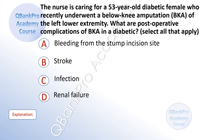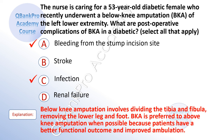The nurse is caring for a 53-year-old diabetic female who recently underwent a below knee amputation (BKA) on the left lower extremity. What are post-operative complications of BKA in a diabetic? Select all that apply. A. Bleeding from the stump incision site. C. Infection. D. Renal failure. The correct answers are A and C. Below knee amputation involves dividing the tibia and fibula and removing the lower leg and foot. BKA is preferred to above knee amputation when possible because patients have a better functional outcome and improved ambulation.